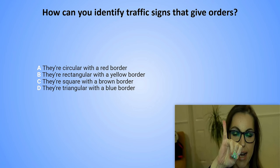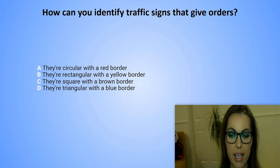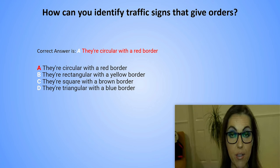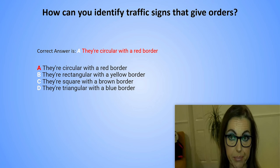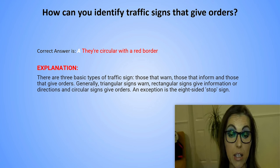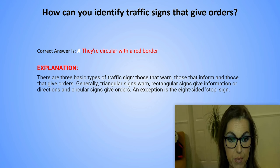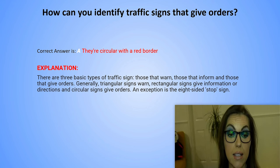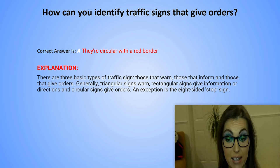The correct answer is A. They are circular with a red border. Explanation: There are three basic types of traffic signs — those that warn, those that inform, and those that give orders. Generally, triangular signs warn, rectangular signs give information or directions, and circular signs give orders. An exception is the eight-sided stop sign.